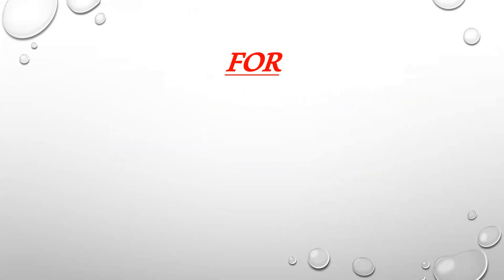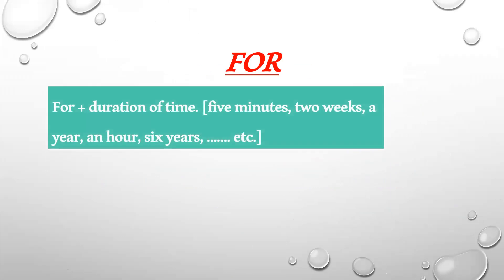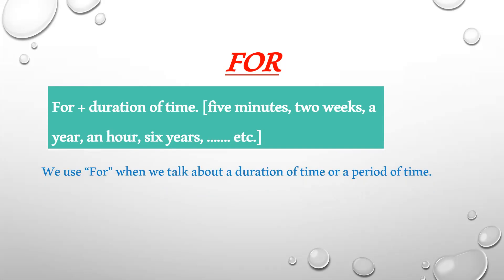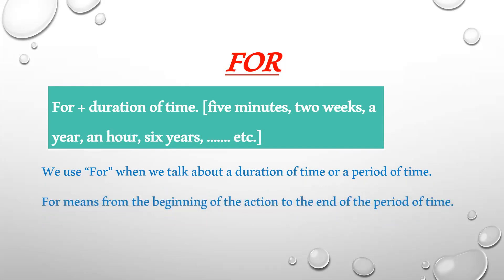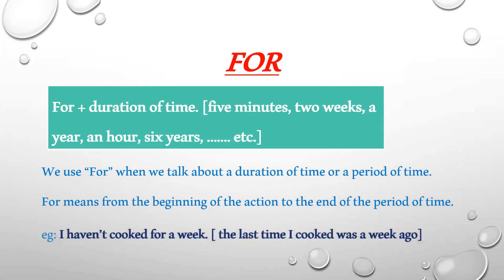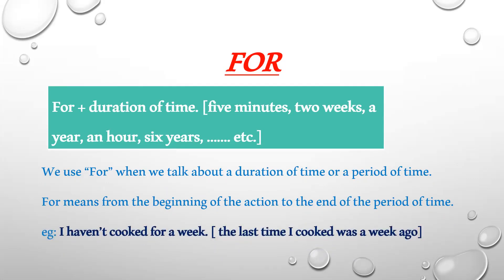Let's start with 'for.' We use 'for' when we are talking about a duration or a period of time — for example, five minutes, two weeks, a year, an hour, six years. 'For' means from the beginning of the action to the end of the period of time. For example: 'I haven't cooked for a week' — the last time I cooked was a week ago.